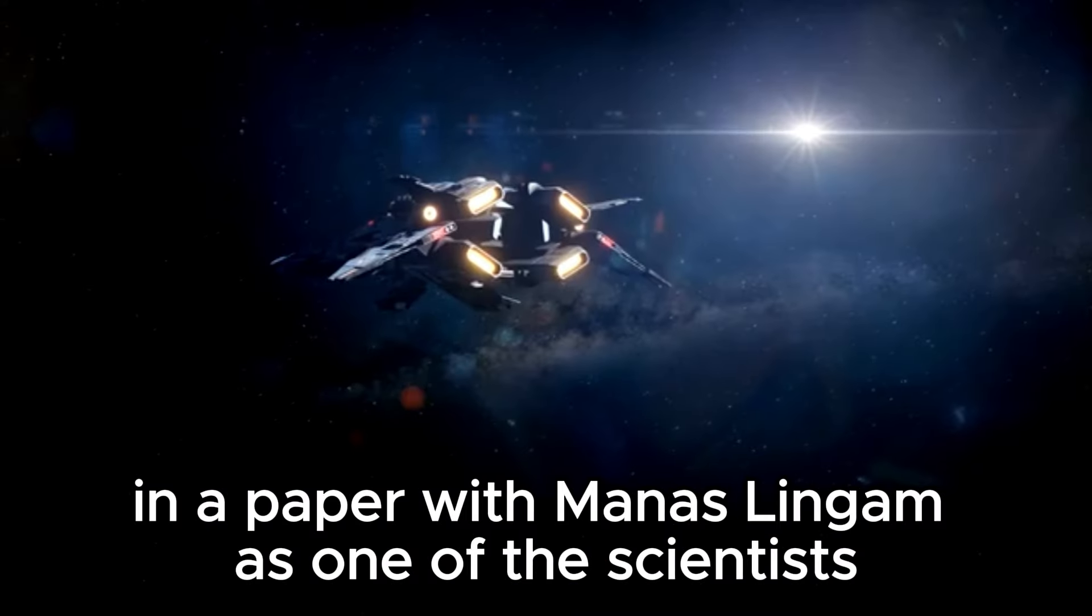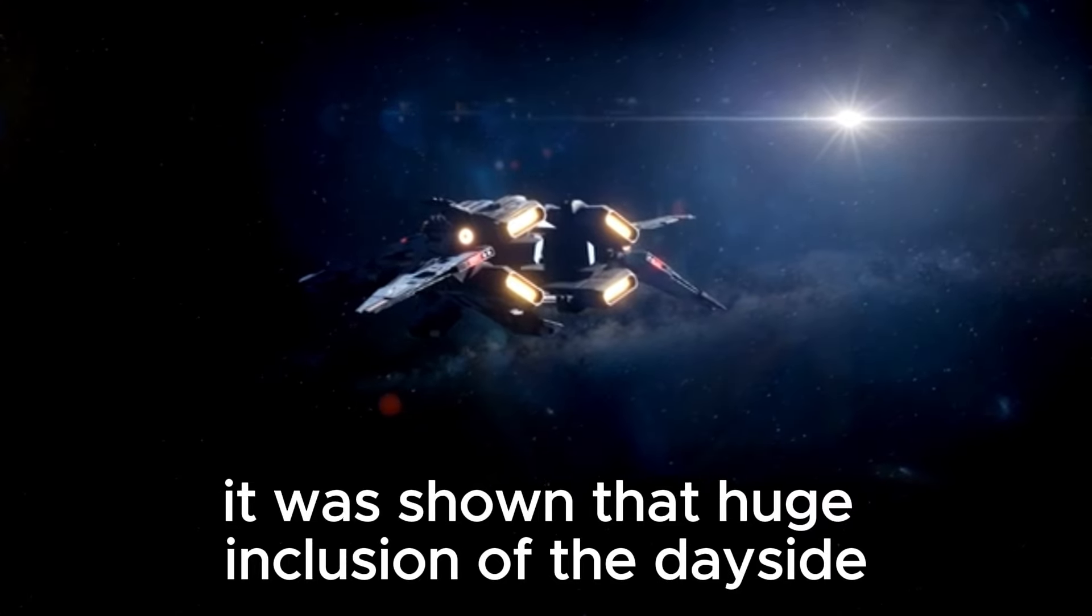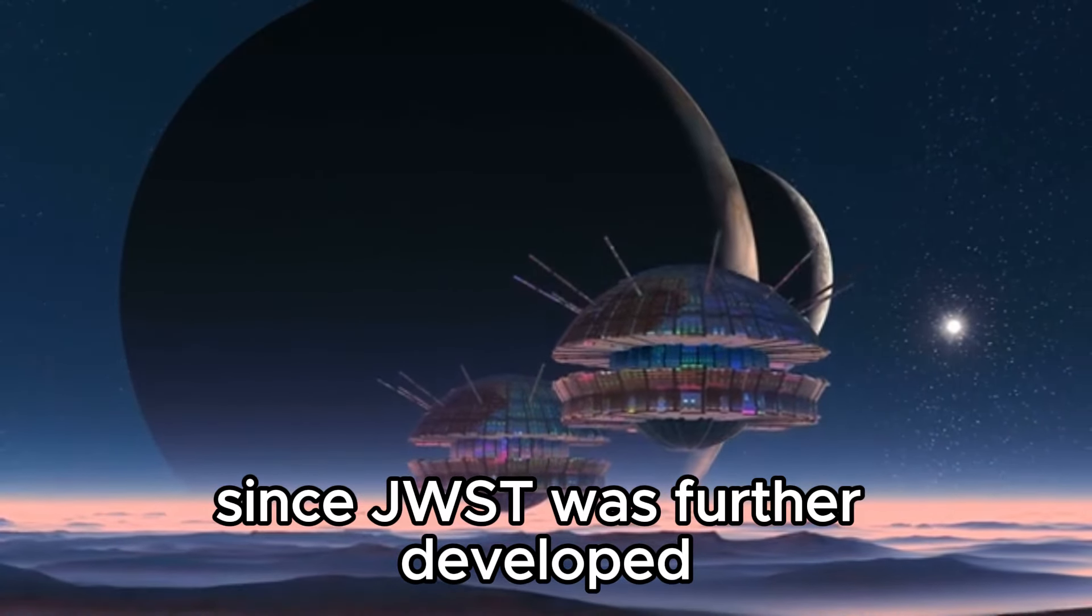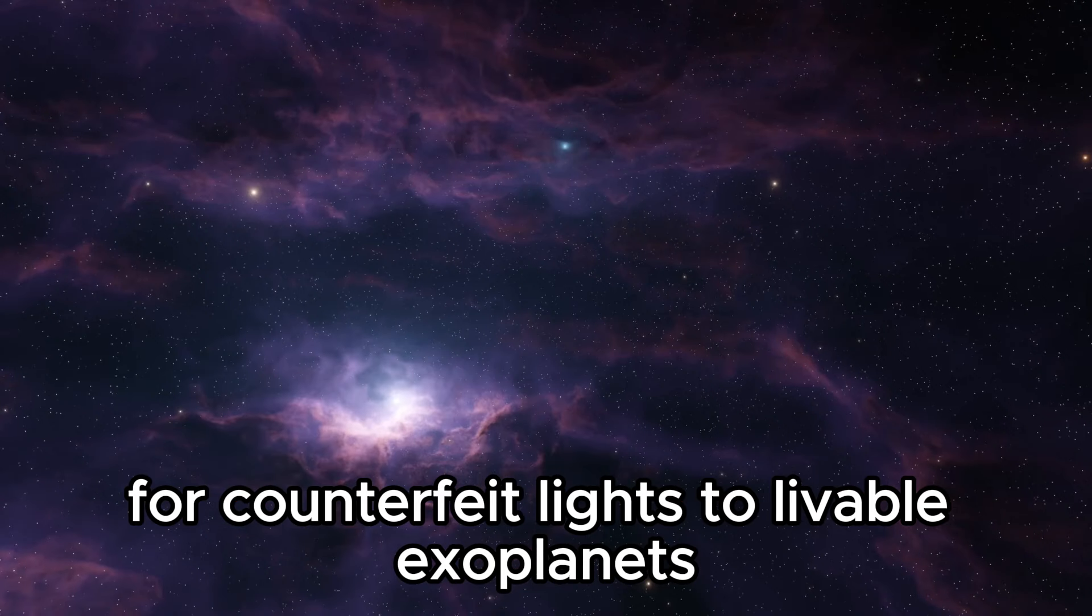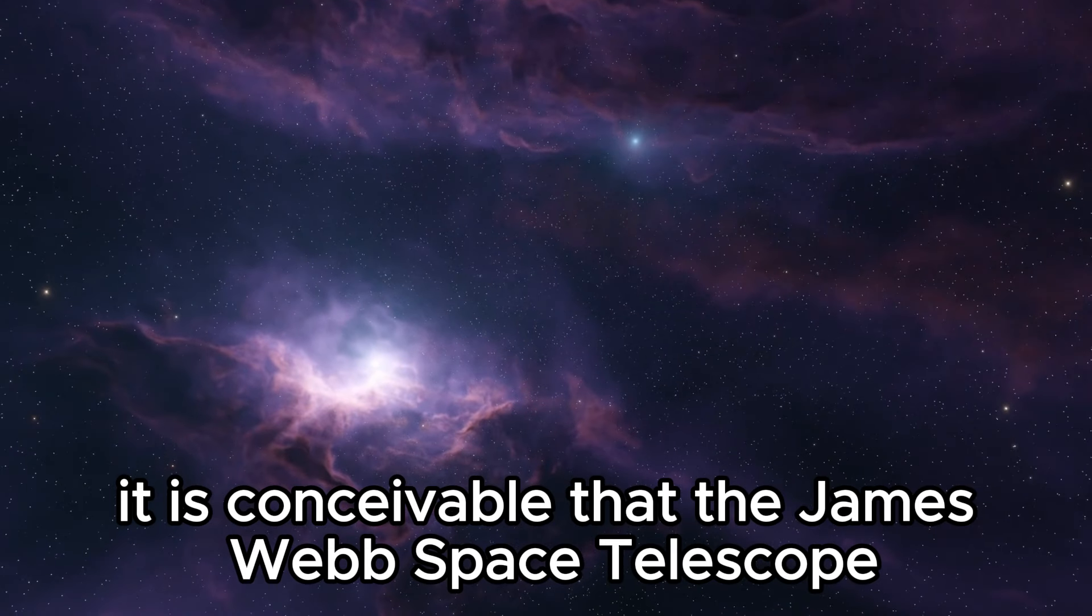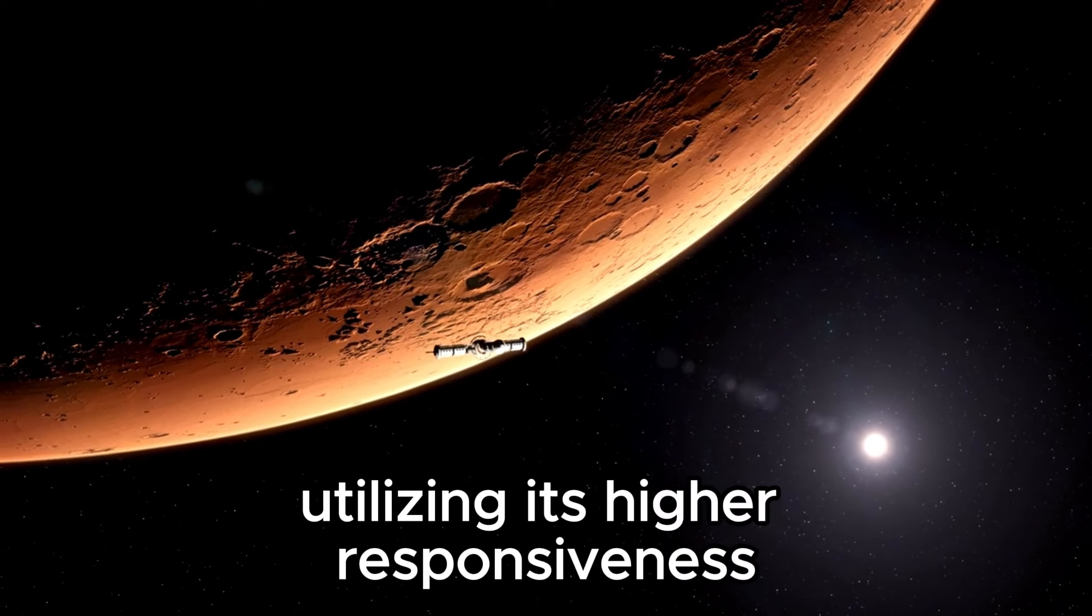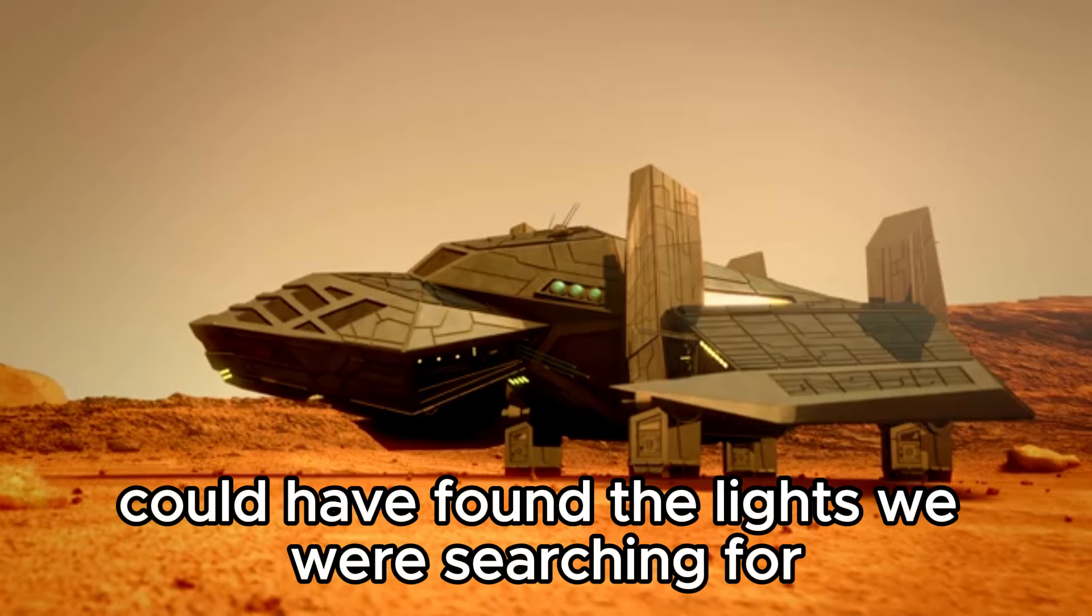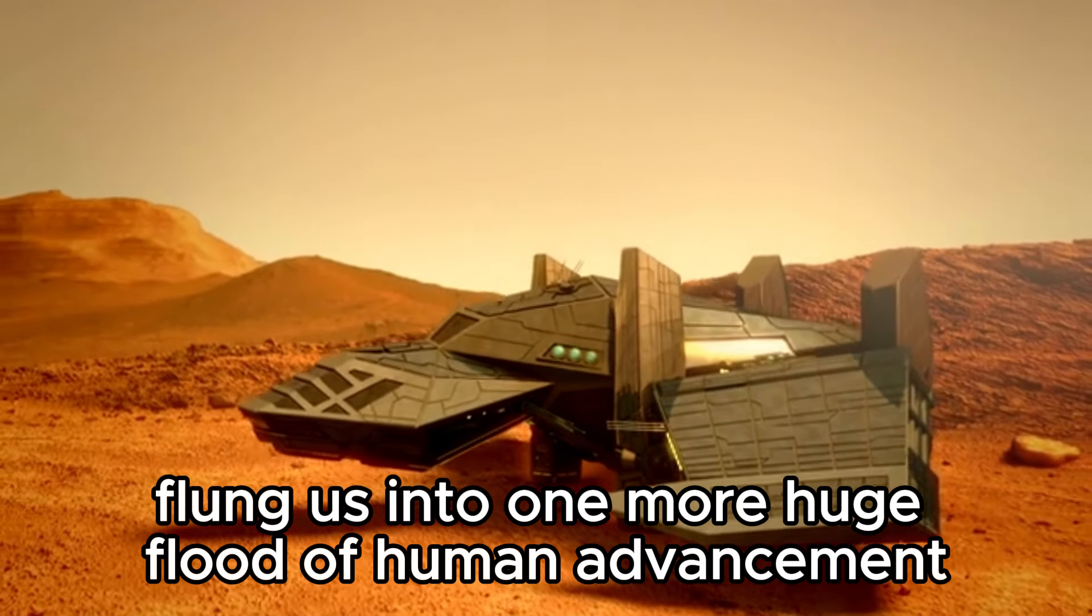Consequently, in a paper with Manasvi Lingam as one of the researchers, it was shown that huge coverage of the dayside by solar panels could be detected with future telescopes. Since JWST was more advanced, it would allow us to expand our quest for artificial lights to habitable exoplanets like Proxima b. Now, in 2024, it is conceivable that the James Webb Space Telescope did exactly that, possibly flinging us into another huge leap of human advancement.